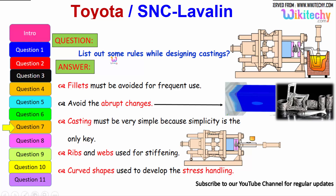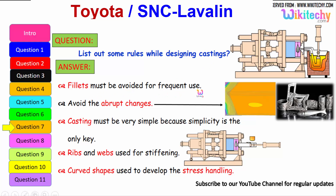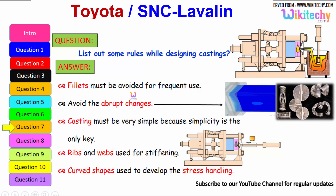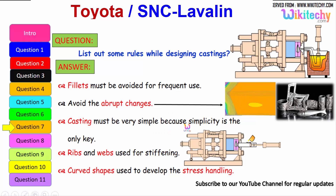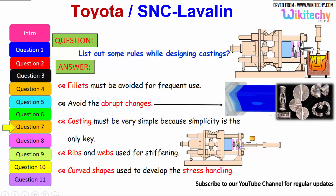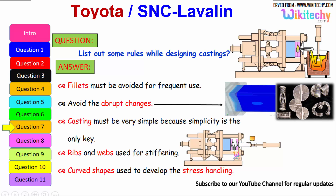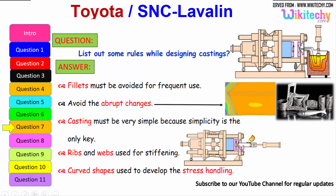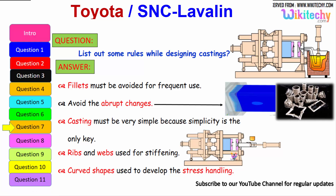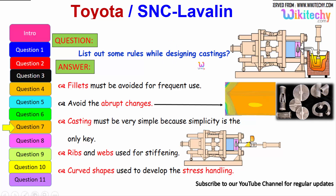Let us see some of the rules while designing castings. Fillets must be avoided for frequent use — that is the first rule. Avoid abrupt changes. Castings must be very simple, because simplicity is the key. Ribs and webs are used for stiffening — you should have ribs incorporated. The curved shape should be used to develop stress handling, so a curved shape helps avoid stress concentration. These are the rules to follow for castings.